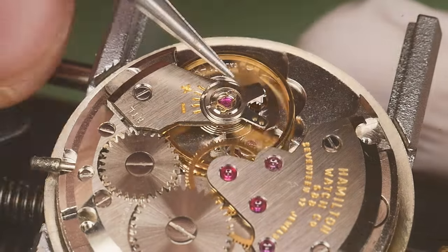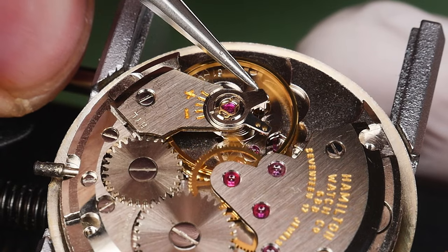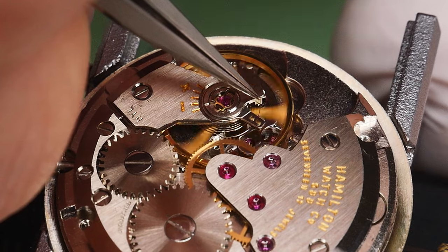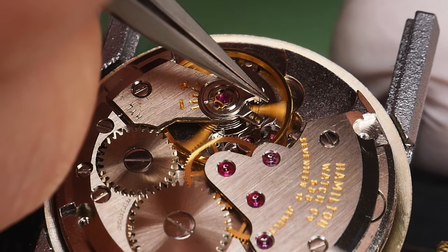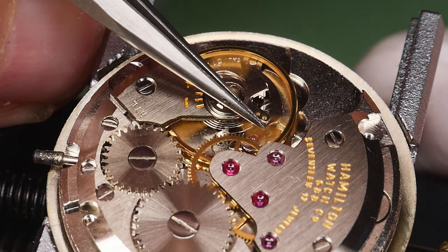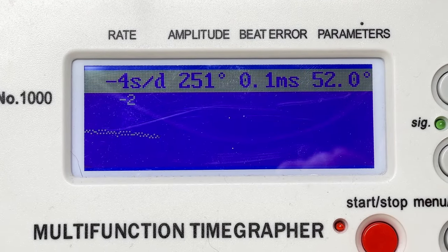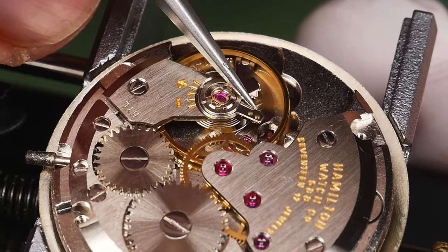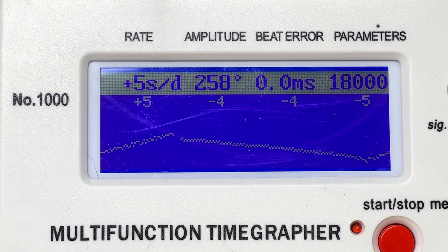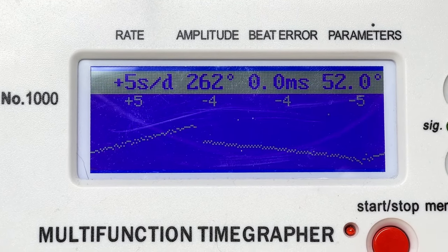Now that the watch has been running for a bit, I'll give it an initial regulation to see what's what. I need to adjust the beat error first. Basically, the time between the ticks and the tocks needs to be equal. Moving this arm on the regulator adjusts the timing of when the impulse jewel on the balance strikes the pallet fork. This arm of the regulator is to adjust the timekeeping. A shorter hairspring means the watch will run faster. A longer hairspring will slow the watch down. After a little back and forth, I'm real happy with a plus five seconds per day on the time grapher. This will settle down after running the watch for a few days.